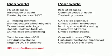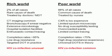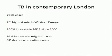Our completion rates at the North Hub are over 95% and we don't have much drug resistance. Completion rates in Southern Africa are well under three-quarters, and there's a lot of drug resistance in those countries. In London at the moment, across the UK we have just over 7,000 cases per year — the second highest in Western Europe — with a 250,000% increase in multi-drug resistance, though still low. There's a large increase in TB in migrants and a small decrease in indigenous people.